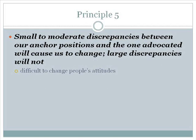According to social judgment theory, it is difficult to change people's attitudes. If new information or messages are judged to fall within one's latitude of rejection, persuasion cannot occur. If one is ego involved in the issue, the latitude of rejection is larger than usual and it is more difficult to persuade. Finally, individuals tend to distort new information through assimilation and contrast. For persuasion to occur, the following must happen: messages must fall in the latitude of acceptance; messages must be different from the anchor position; and messages cannot be assimilated or contrasted.